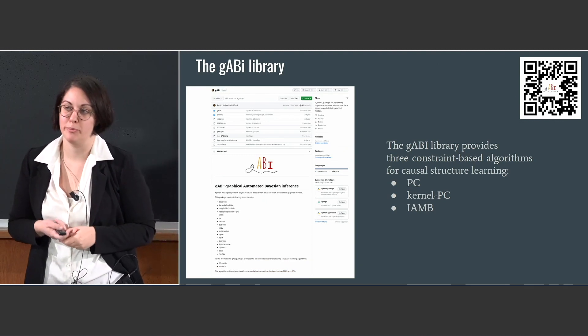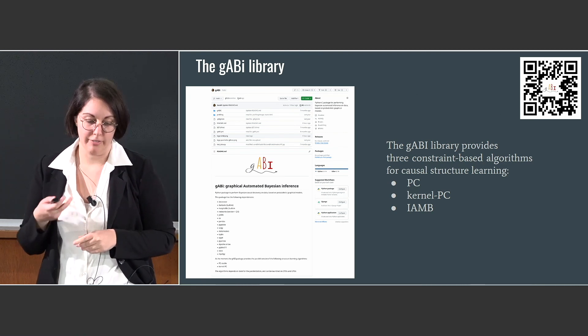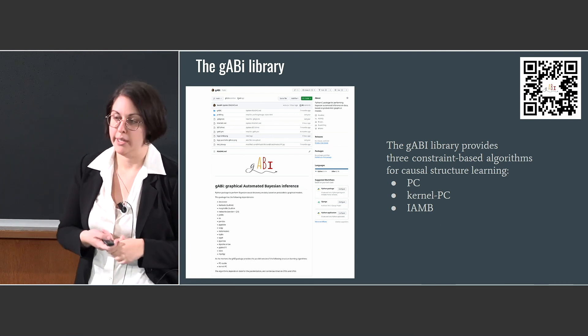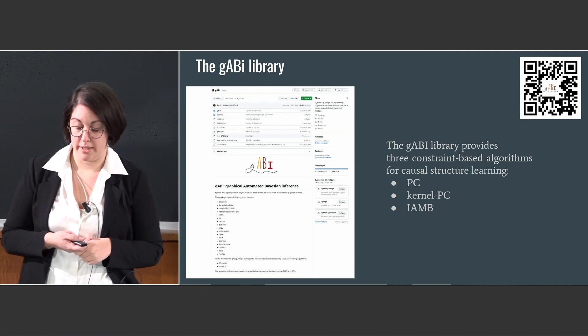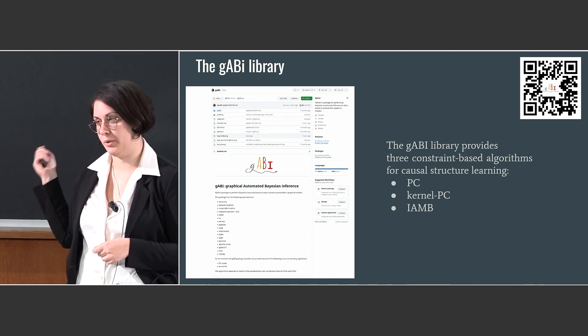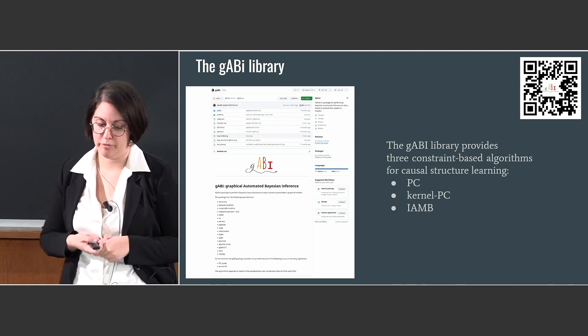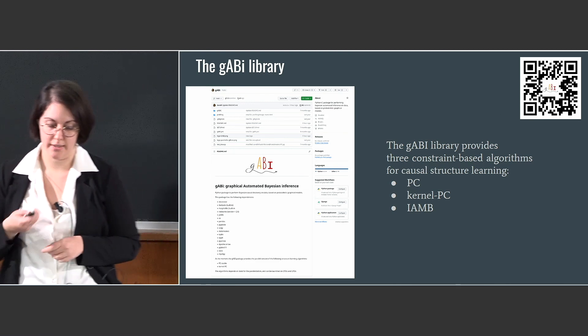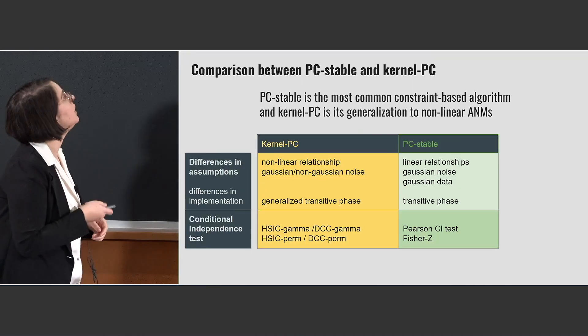And I want to present a package that I have made, that is called Graphical Automated Bayesian Inference. It is available on GitHub and includes three causal structure learning algorithms. The most commonly used one is the PC algorithm from the name of the authors, and then there is the Kernel PC and the IAMB algorithms. In particular, I will focus on the comparison of these algorithms.